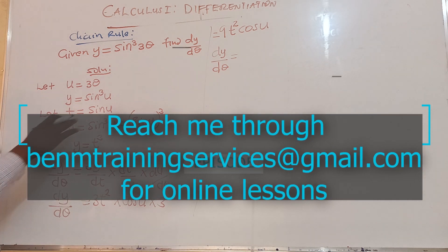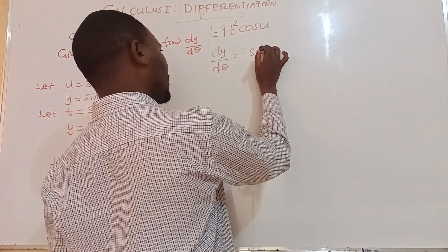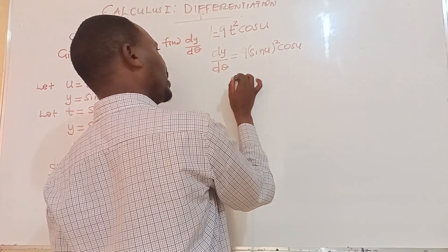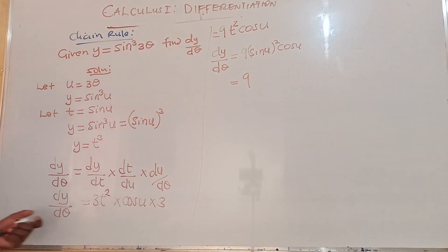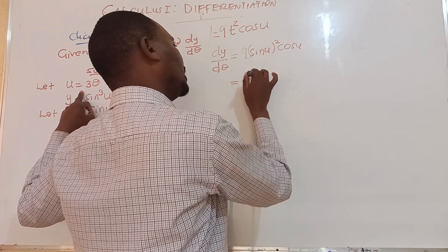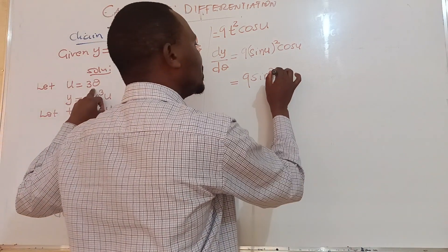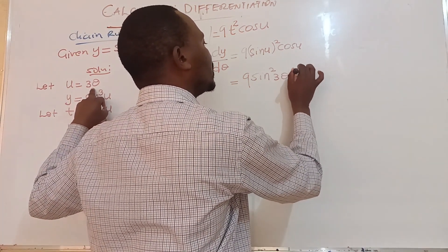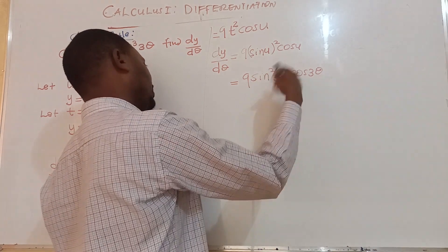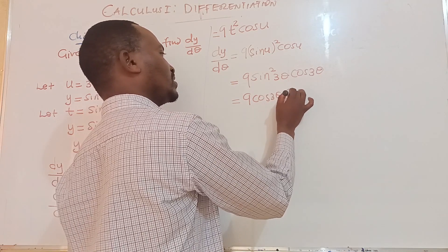We know t is sine u, so this becomes 9 sin²u · cos u. The value of u is 3θ, so substituting back we get 9 sin²(3θ) · cos(3θ). You can also rewrite this as 9 cos(3θ) sin²(3θ) if you prefer — both forms are acceptable.